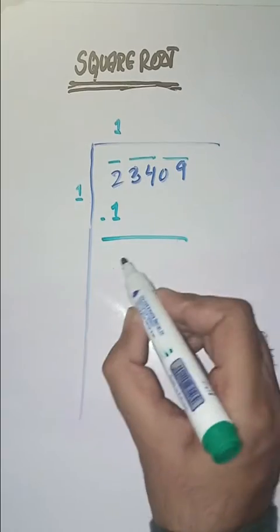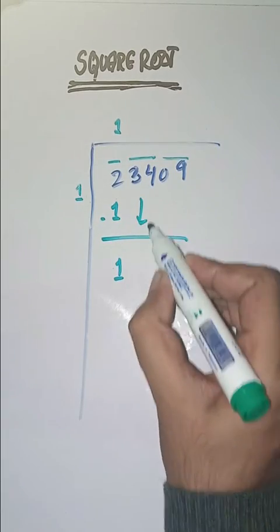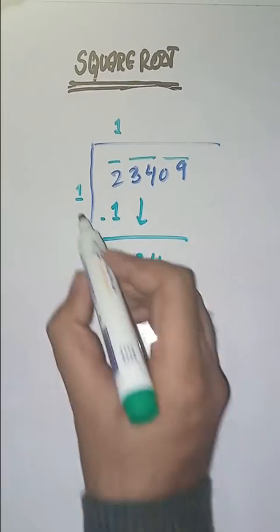Next pair we'll pass 34. We'll bring this down here. Here we will do one plus one which is equal to two.